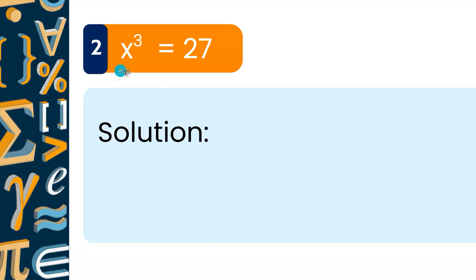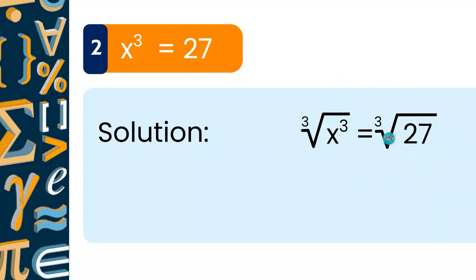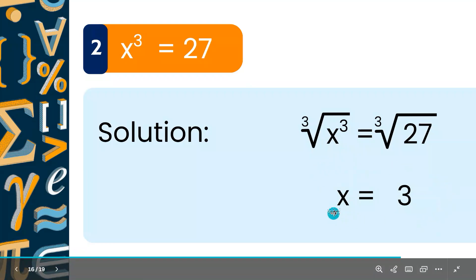Next problem: X cubed equals 27. Solve for X. We use a cube root to eliminate the cube, just like we used a square root to eliminate the square. We've already seen the cube root of 27 in an earlier example, so the answer is X equals 3.